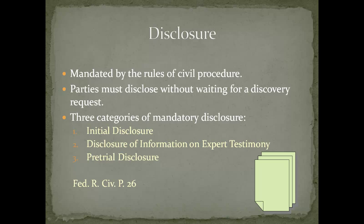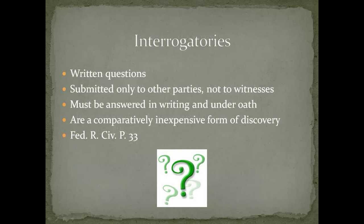Disclosure is covered in Rule 26 of the Federal Rules of Civil Procedure. Another discovery tool is interrogatories, addressed in Rule 33 of the Federal Rules of Civil Procedure. Interrogatories are written questions submitted only to other parties, not to witnesses, and they must be answered in writing and under oath. Interrogatories provide a relatively inexpensive way to gather information from an opposing party, particularly as compared to depositions.